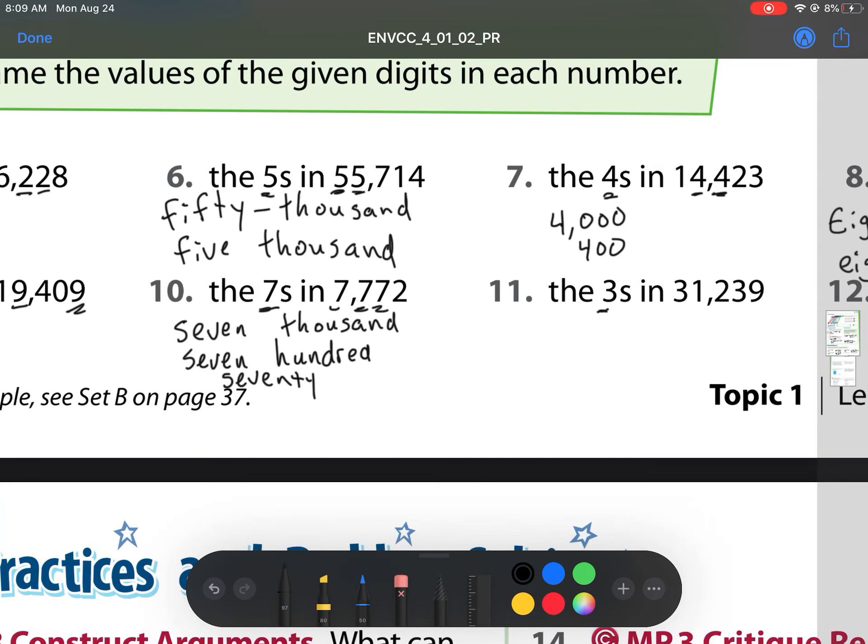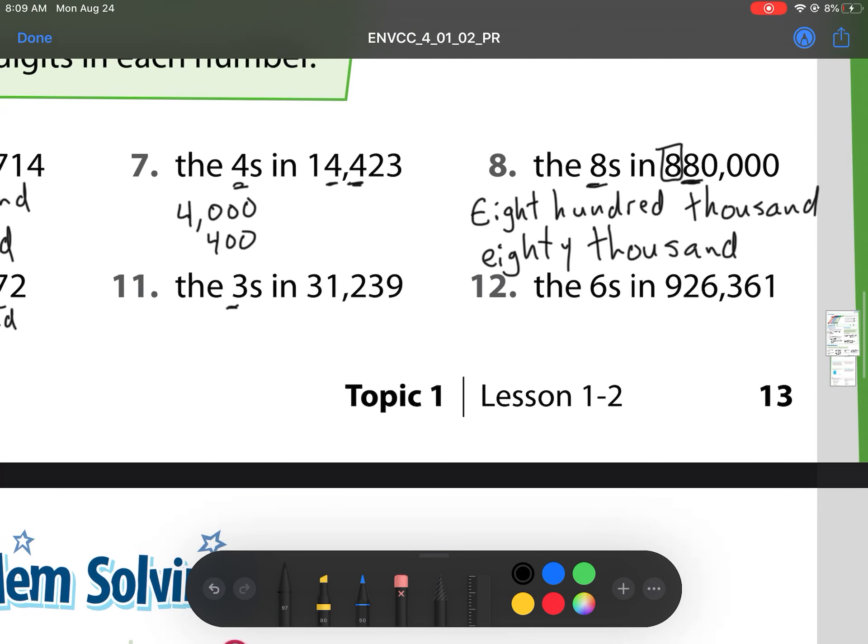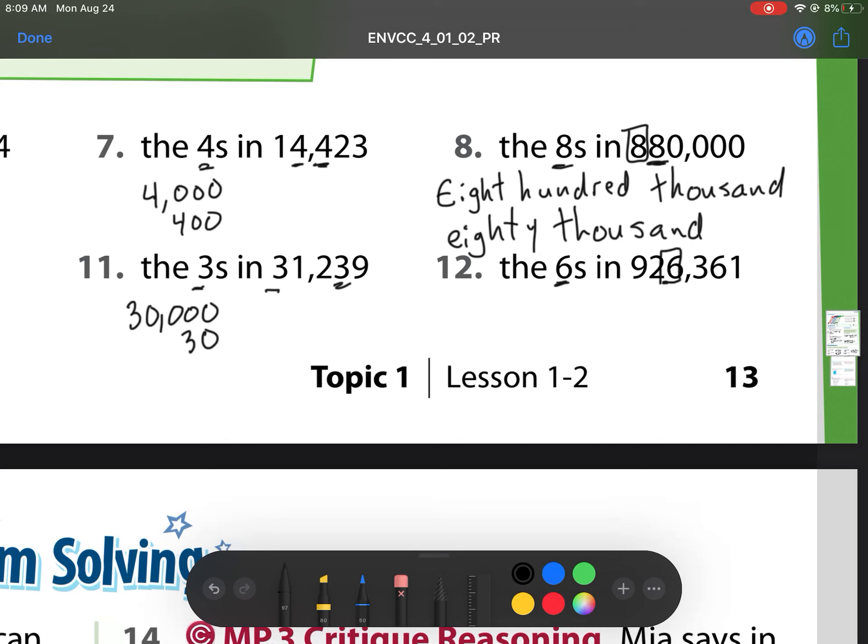This threes is our last one for our odd numbers. So we have 30,000 and 30. Now we have our last one on this page. The sixes. We see that six is in the thousands place. So that's 6,000. And what else do we have? We have six tens, which is 60.